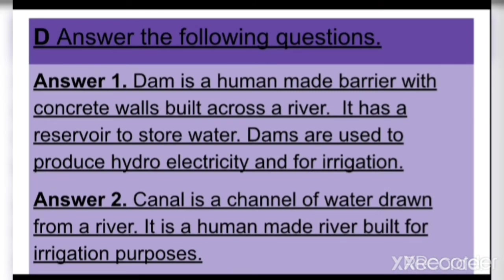It has a reservoir to store water. Dams are used to produce hydroelectricity and for irrigation. Answer two: A canal is a channel of water drawn from a river. It is a human-made waterway built for irrigation purposes.